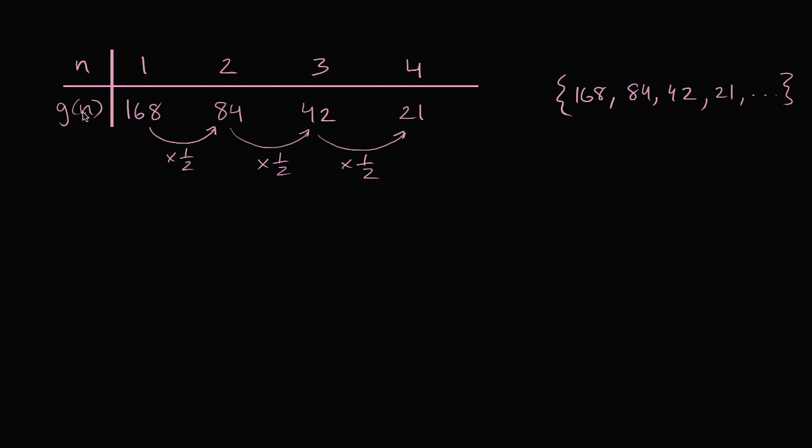So how can we write g of n, how can we define this explicitly in terms of n? And I encourage you to pause the video and think about how to do that. So if I say g of n equals, think of a function definition that describes what we've just seen here, starting at 168, and then multiplying by 1 half every time you add a new term.